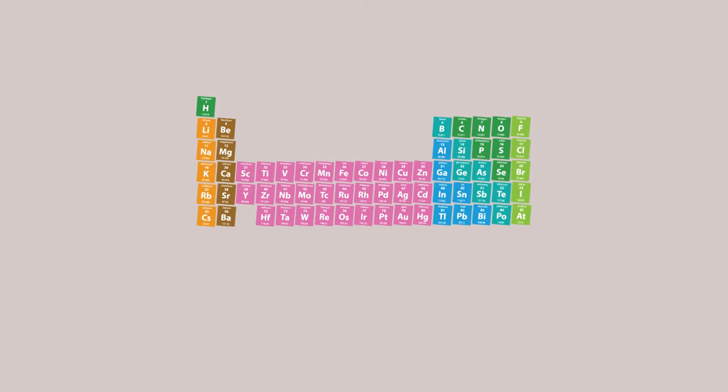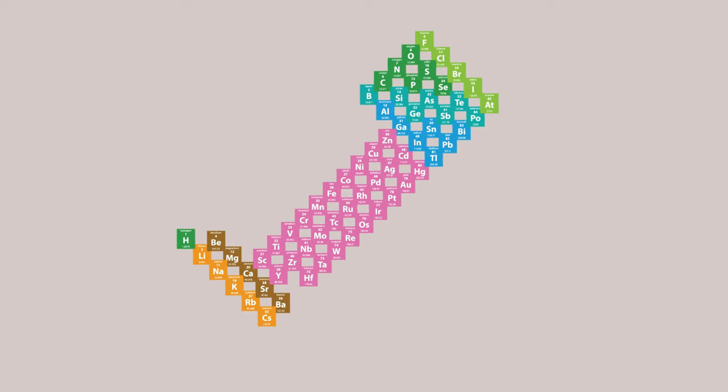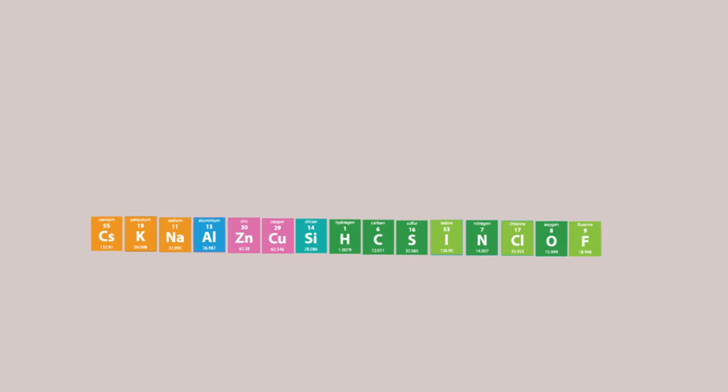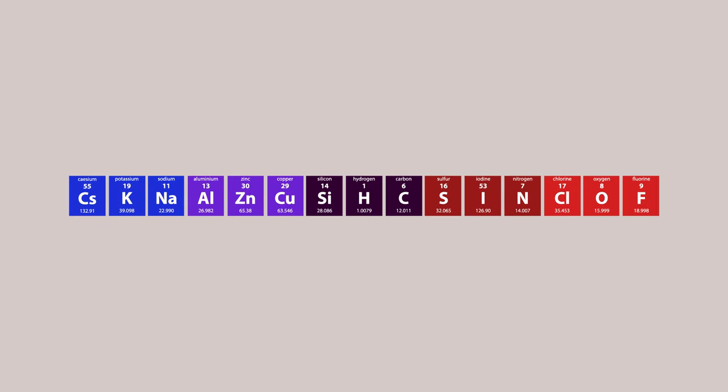If we twist the periodic table clockwise and then squash it flat, we pretty much have the elements arranged from the most metallic caesium to the most non-metallic fluorine.